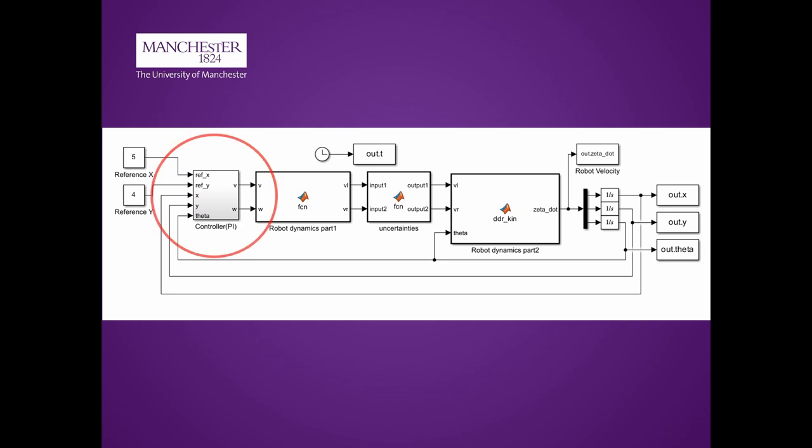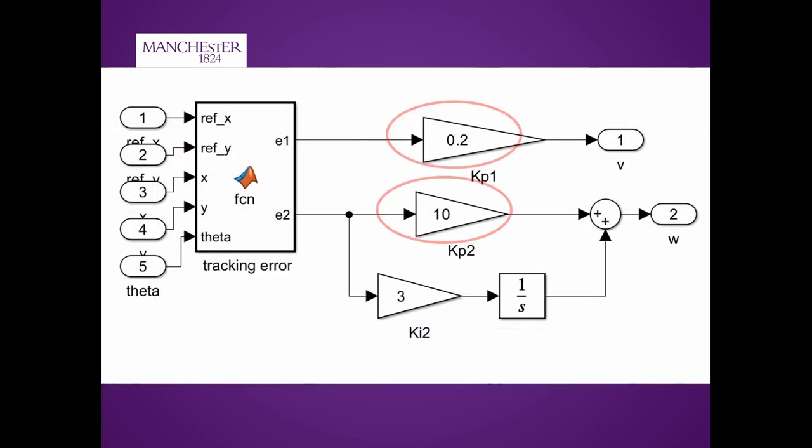For our third step, a PI controller is introduced to the system. This controller will use our uncertainties to adapt the current velocities in order to achieve a target speed or rotation, depending on the tuned proportional gain and integral gains.